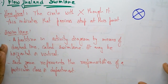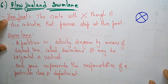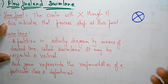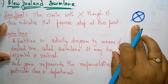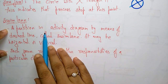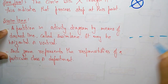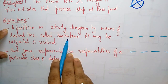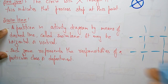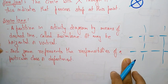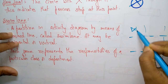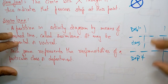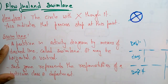The next notations are flow final and swim lane. Flow final is represented as a circle with an X mark inside — this indicates the process stops at that point. Swim lane is a partition in an activity diagram by means of a dashed line, which may be horizontal or vertical. The size of zones represents the responsibility of a particular class or department, dividing the activity diagram into modules such as department one, another class, and another department.